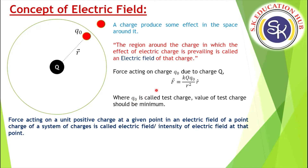The definition of the electric field corresponding to force is: the force acting on a unit positive charge at a given point in the electric field of a point charge or a system of charges is called the electric field, or intensity of electric field, at that point. For example, suppose due to capital Q, there was a charge of 1 coulomb here, and due to capital Q, the force on 1 coulomb was 1000 newtons.